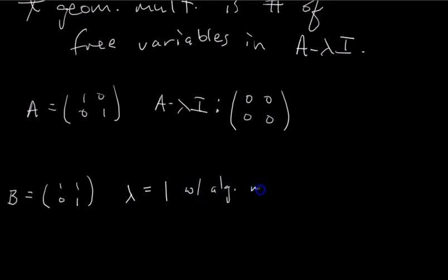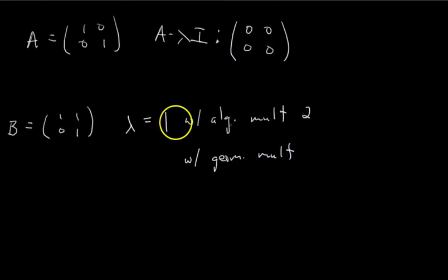It's a repeated solution to the characteristic polynomial set equal to 0. So you can say lambda equals 1 with an algebraic multiplicity of 2. And then with geometric multiplicity of what? Well, let's apply our shortcut. B minus lambda I is 0, 1, 0, 0. And how many free variables do we have? Now we only have one free variable. So the geometric multiplicity is 1.